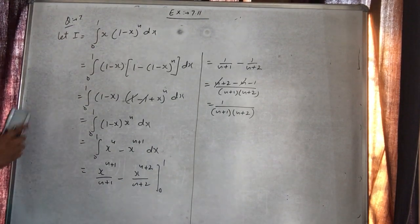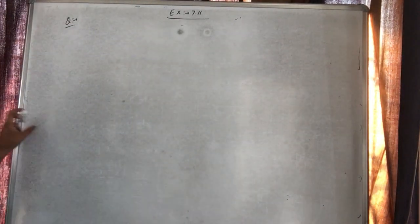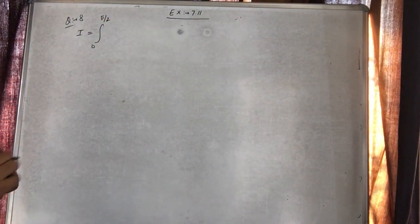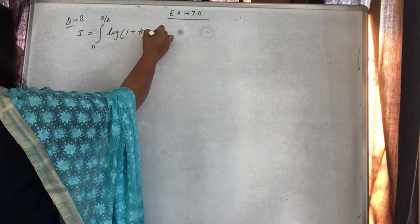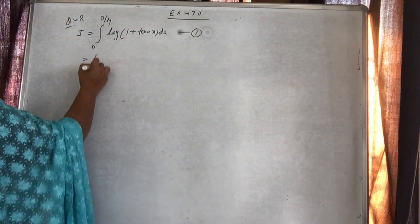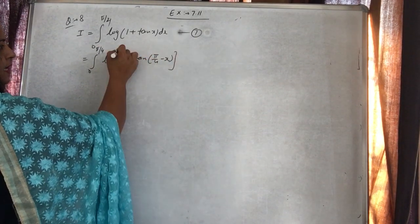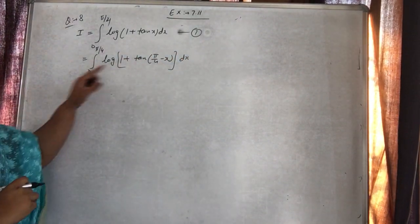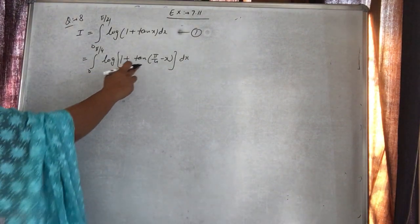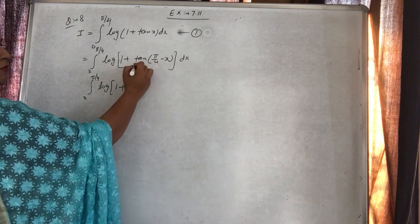Question number 8: integral 0 to π/4, log of (1 plus tan x) dx. Limit 0 to π/4 — lower limit 0 aa gai. Toh 0 to a ki property: x ko upper limit minus x se replace karo. Toh log of 1 plus tan(π/4 minus x). Ab yeh quadrant nahi hai — π/4 hai, π/2 hota toh cot ho raha hota. Isse solve karne ke liye pehle tan(a minus b) ka formula apply karo.